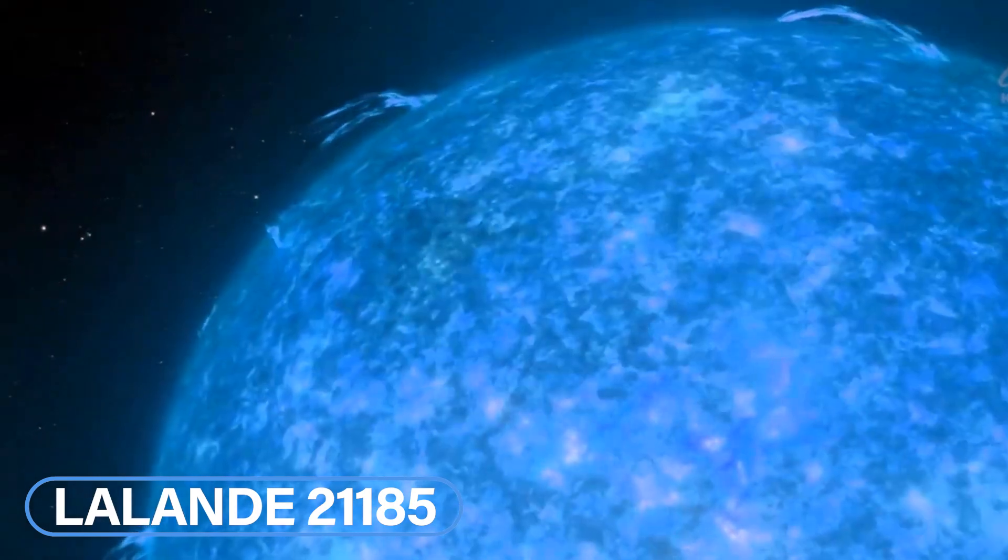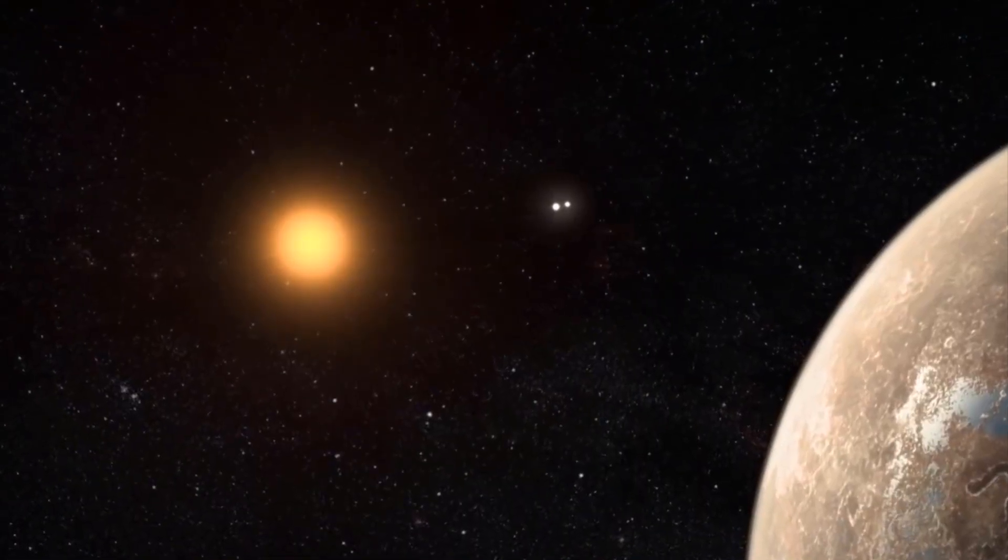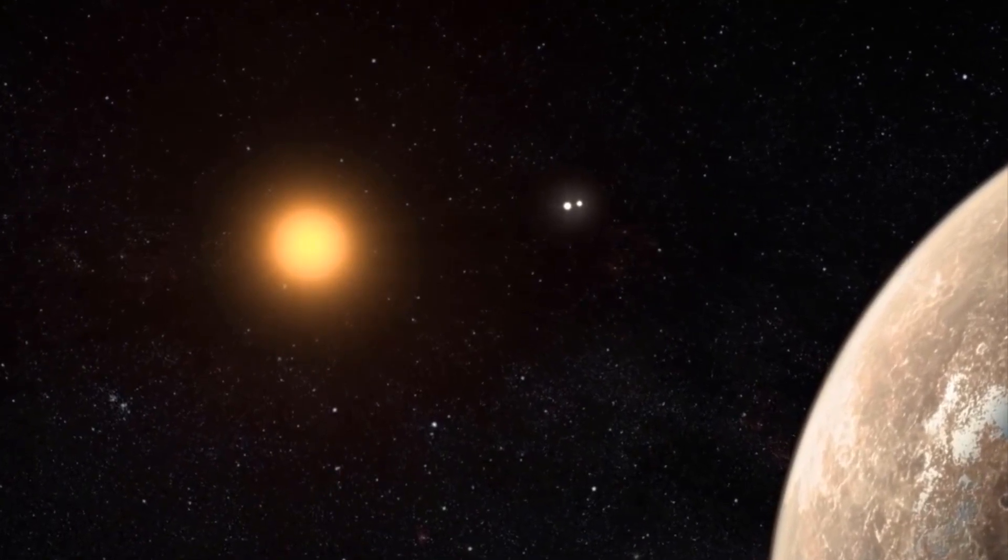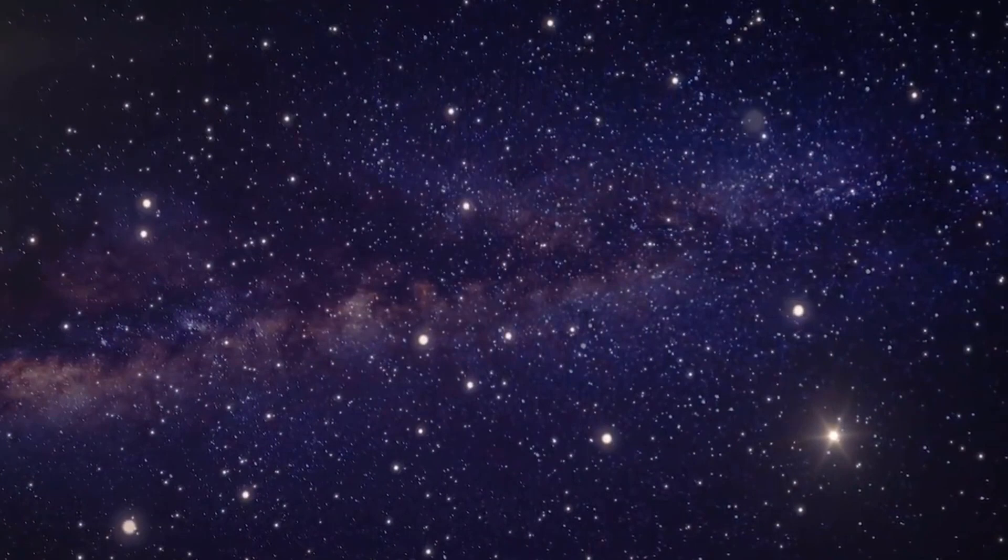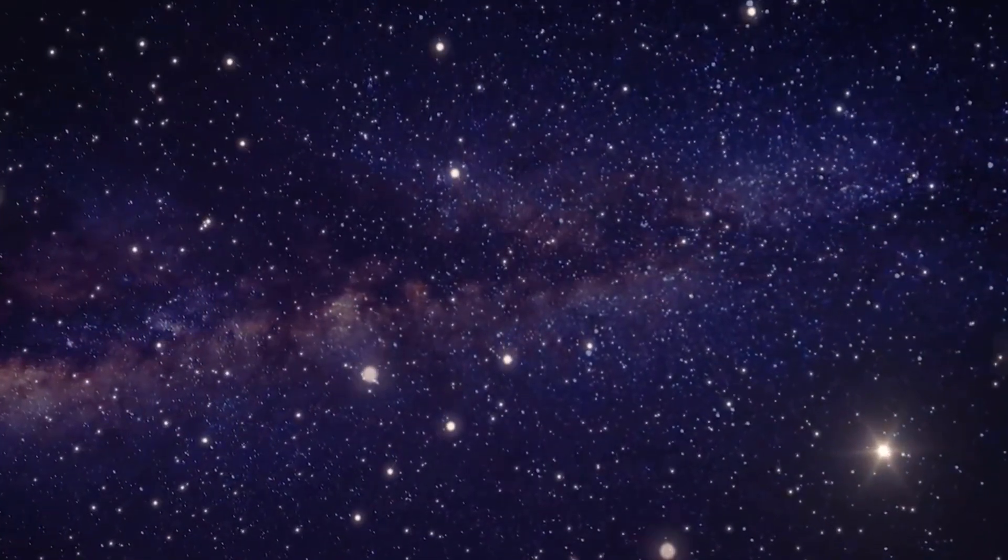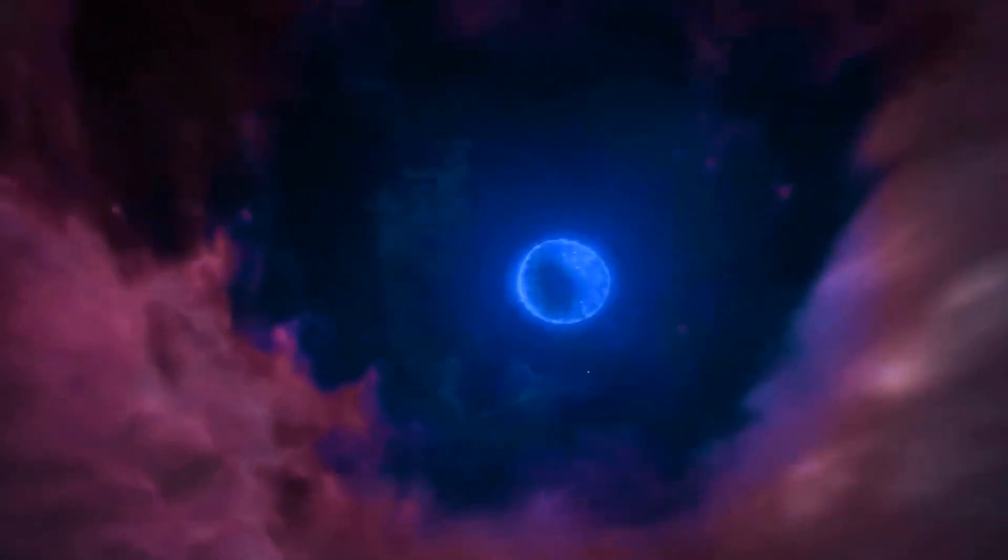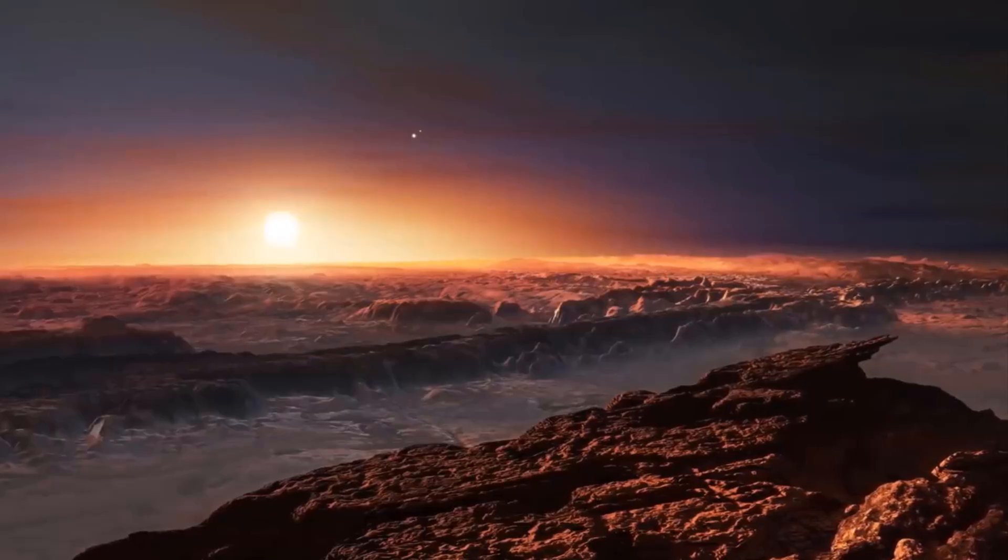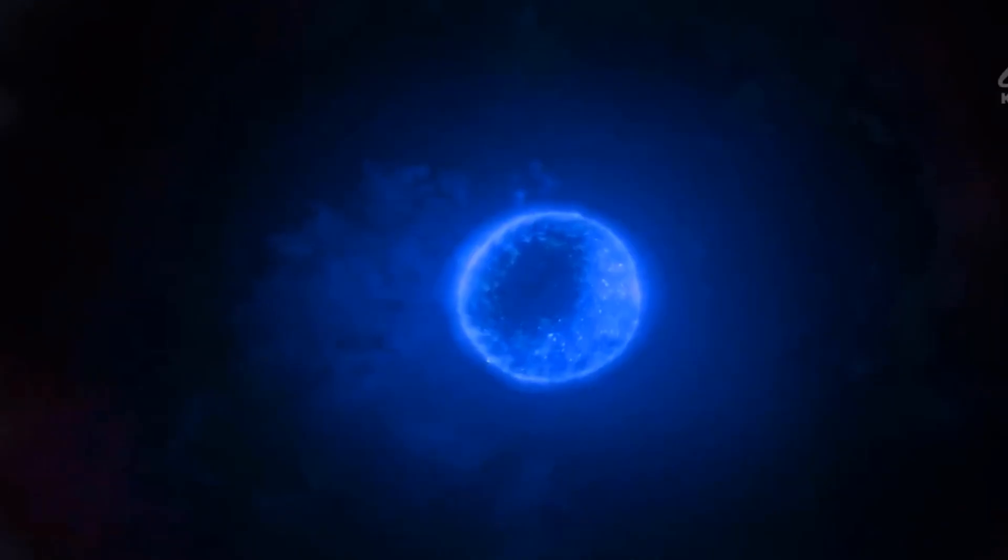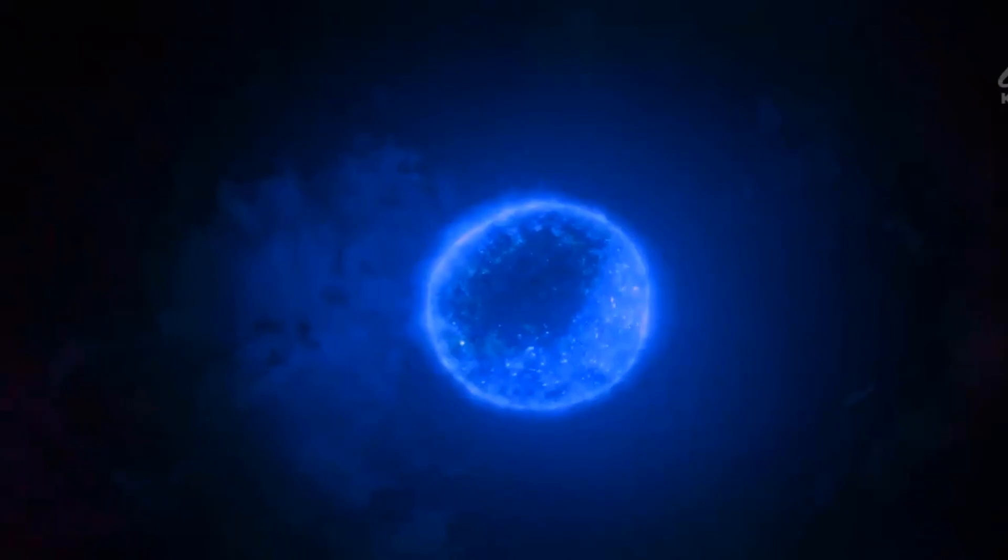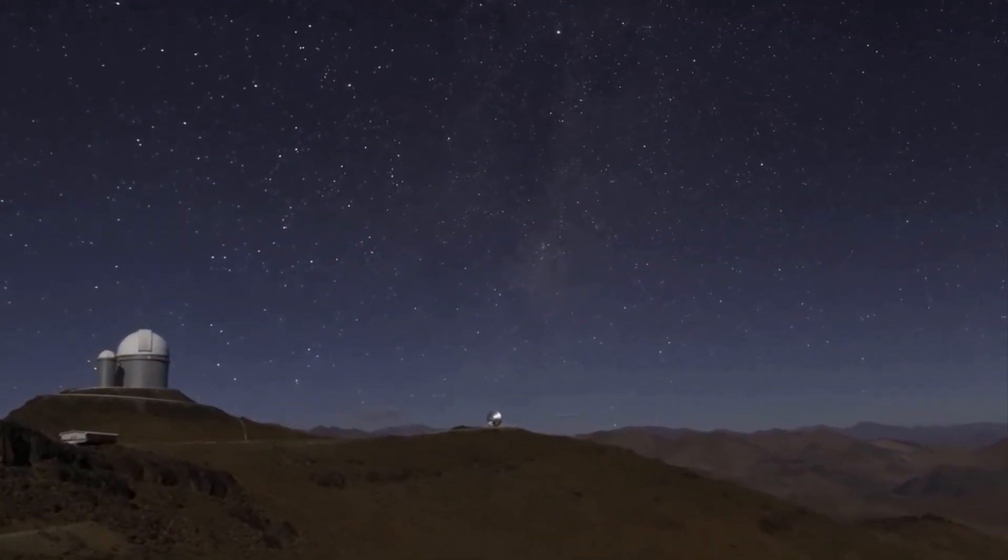Lalandi 21185. At 8.29 light years from Earth sits a faint red dwarf called Lalandi 21185. It is located in the constellation Ursa Major and like most other stars, it is too dimly lit to be seen by the naked eye. While it may not be easily visible, it is still a major point of interest for astronomers. This is because observations show that the star may have other planets orbiting it. The study of the star and its planetary system will likely give us more clues on how such worlds form and evolve around much older stars.